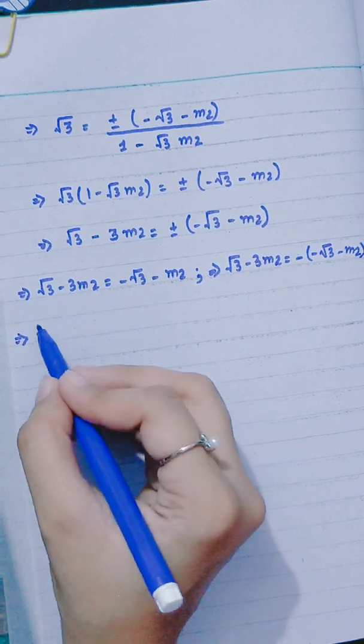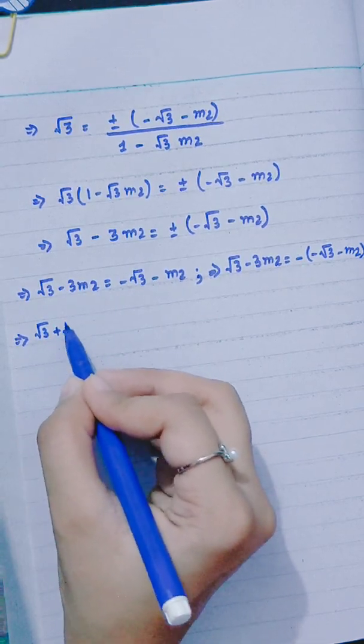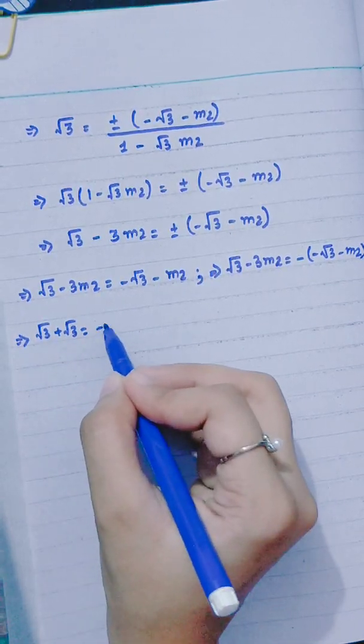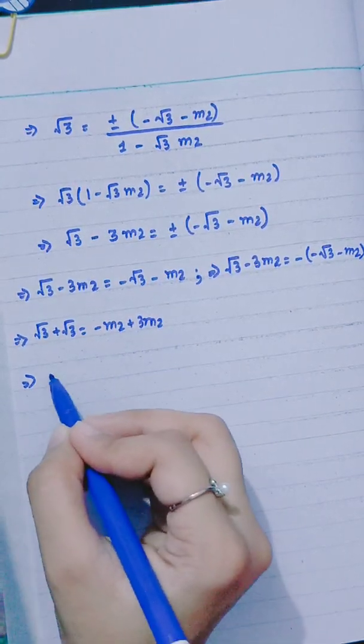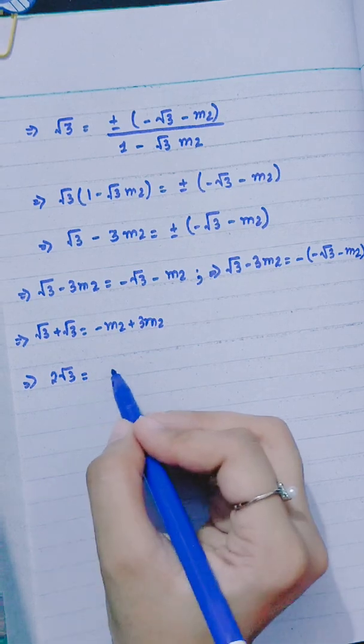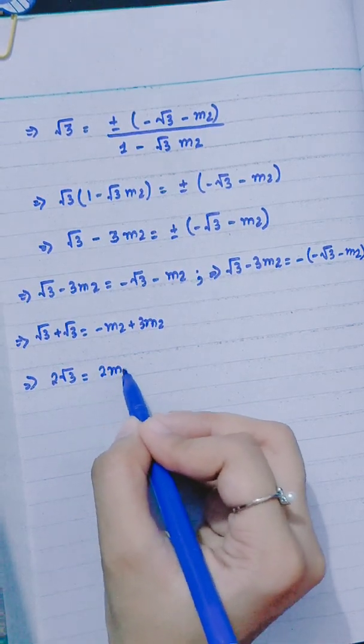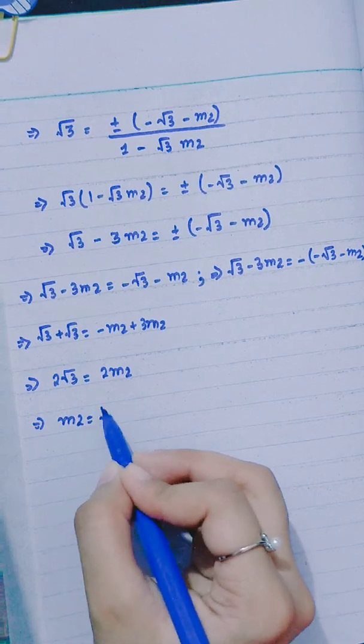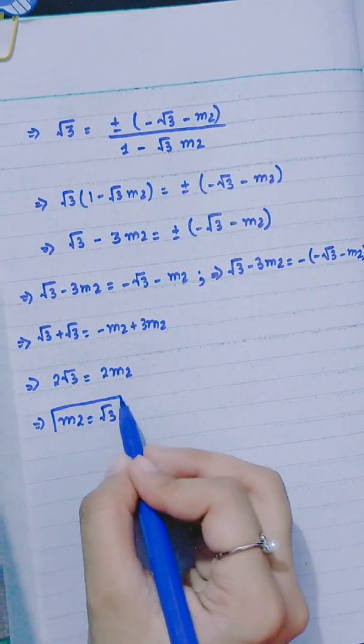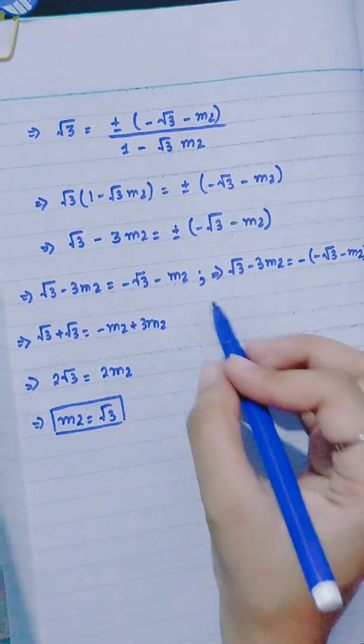Taking positive sign: √3 - 3M2 = -√3 - M2. Rearranging: √3 + √3 = -M2 + 3M2, so 2√3 = 2M2, therefore M2 = √3.